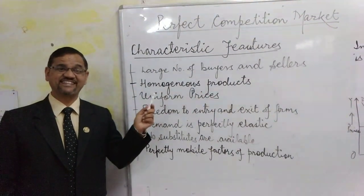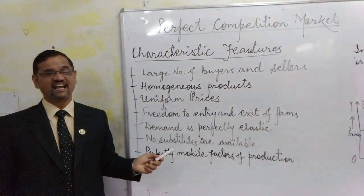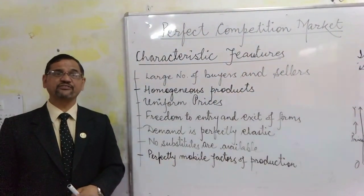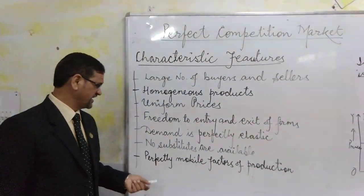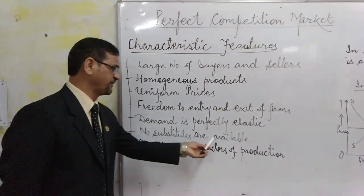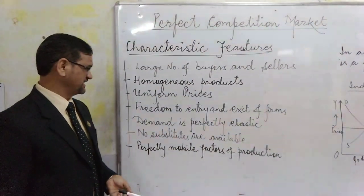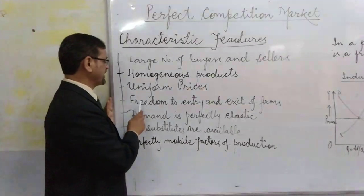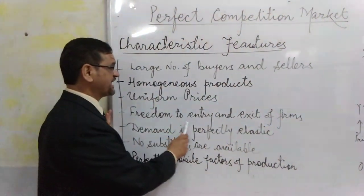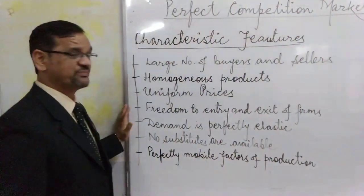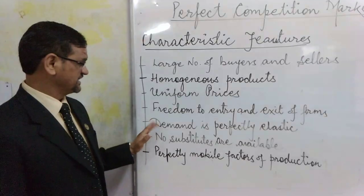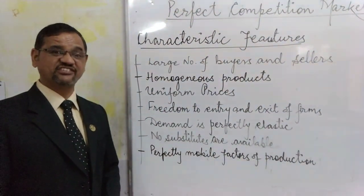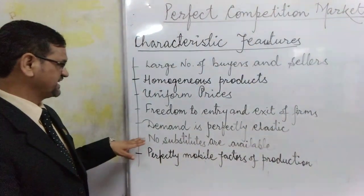All the products are exactly identical in this market and there is no necessity of producing something which is a close substitute. That's why we say there is no substitute available in this particular market. All the firms are free to enter and exit the market. The freedom to enter and exit is a characteristic feature of perfect competition market.